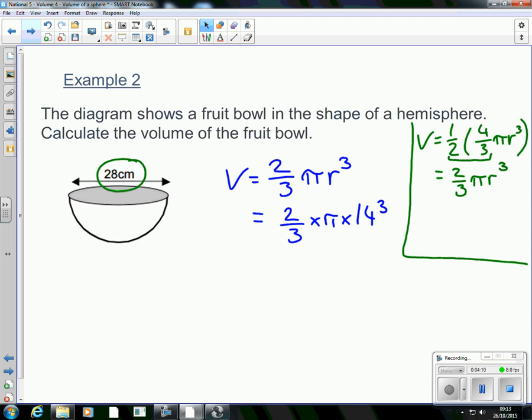And then you type in your calculator. And it gives you 5747.020 and so on. Let's do our significant figures. 1, 2, 3.